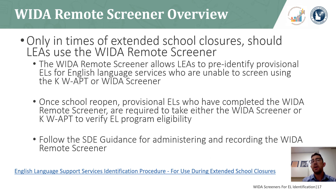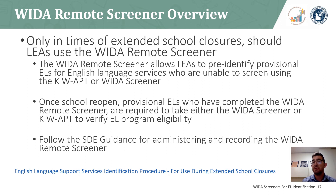The WIDA Remote Screener is used in times of extended school closures. Districts can use the WIDA Remote Screener to pre-identify provisional ELLs for English language support services prior to being formally screened. This screener is only used when students cannot be physically in attendance to take either the WIDA Screener or Kindergarten WAPT. Upon school reopening, all students pre-identified for English support services are required to take either the KWAPT or WIDA Screener to verify eligibility, and the student will be formally identified at this time. For more information on how to pre-identify a student for English Support Services, reference the English Language Support Services identification procedure for use during extended school closures on the ELPA webpage.